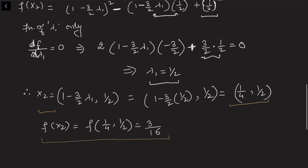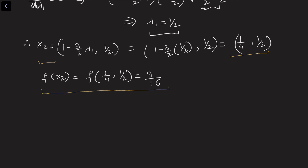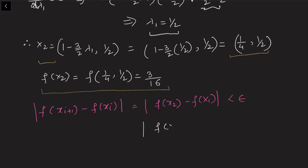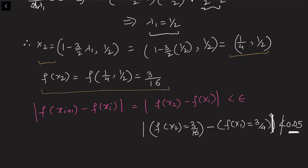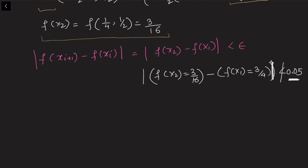We now check the stopping criteria: |f(x2) − f(x1)| = |3/16 − 3/4| = 9/16, which is not less than or equal to 0.05. This does not satisfy the precision requirement, so we need to find another point x3 and repeat the same process.